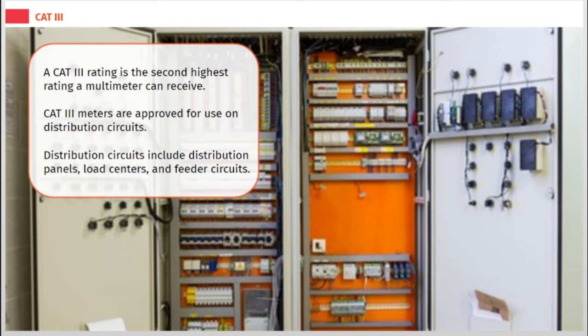A CAT 3 rating is the second highest rating a multimeter can receive. CAT 3 meters are approved for use on distribution circuits. Distribution circuits include distribution panels, load centers, and feeder circuits.